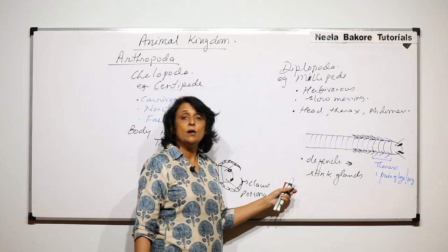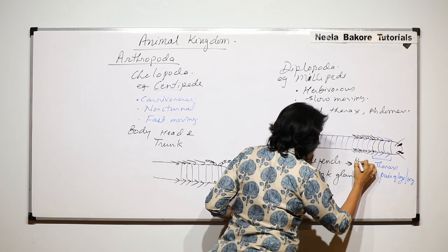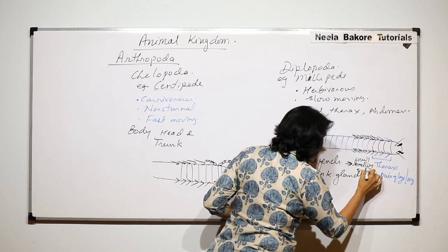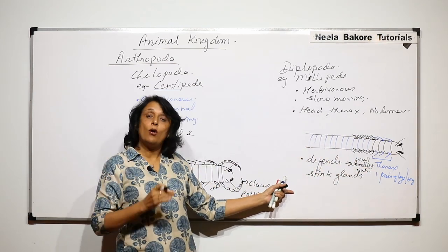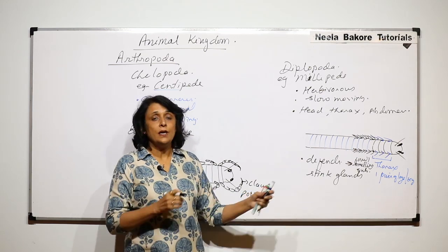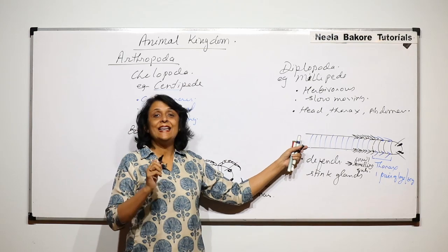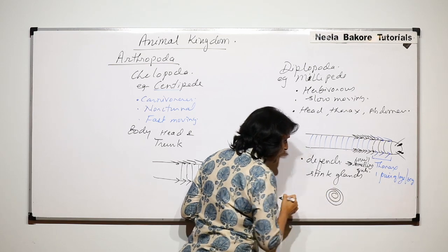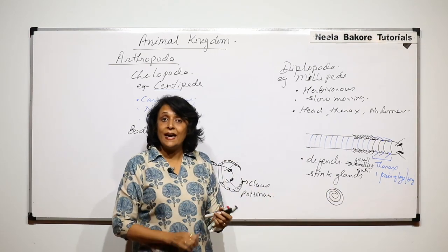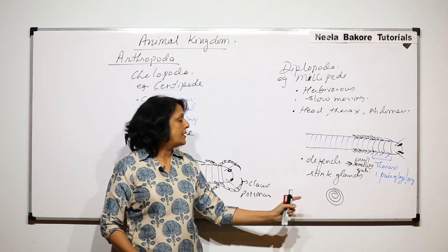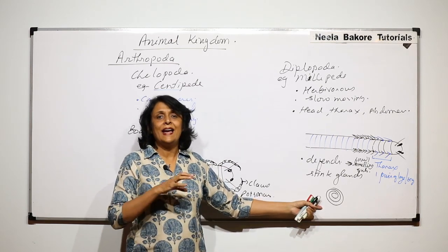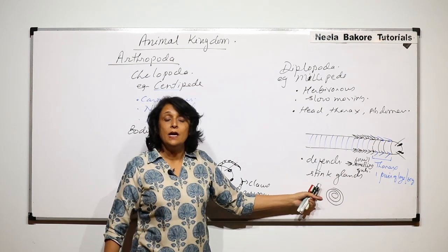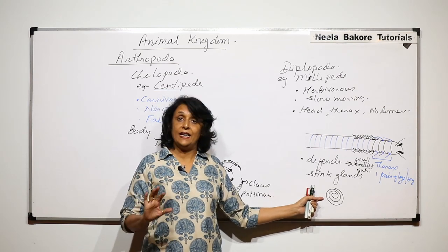The millipede defends itself by secreting a foul smelling substance through its stink glands. It also has one more defense feature: if irritated, it makes a tight coil around itself, and the coil is so tight that even if we try to open it, it won't open.